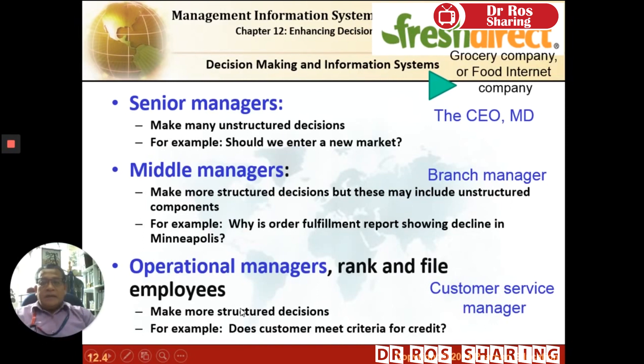At the IT information system level, these are decisions that will be made by managers. Managers use information systems to make accurate and effective decisions for their businesses. Among those managers are operational managers, middle managers, and senior managers. Let's take a look at how decision making is carried out using information systems.